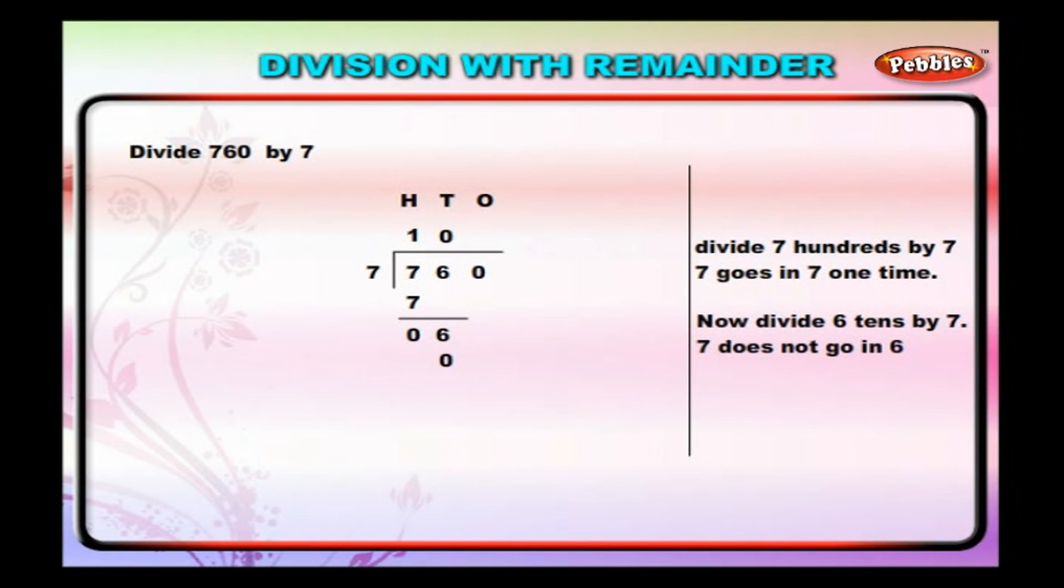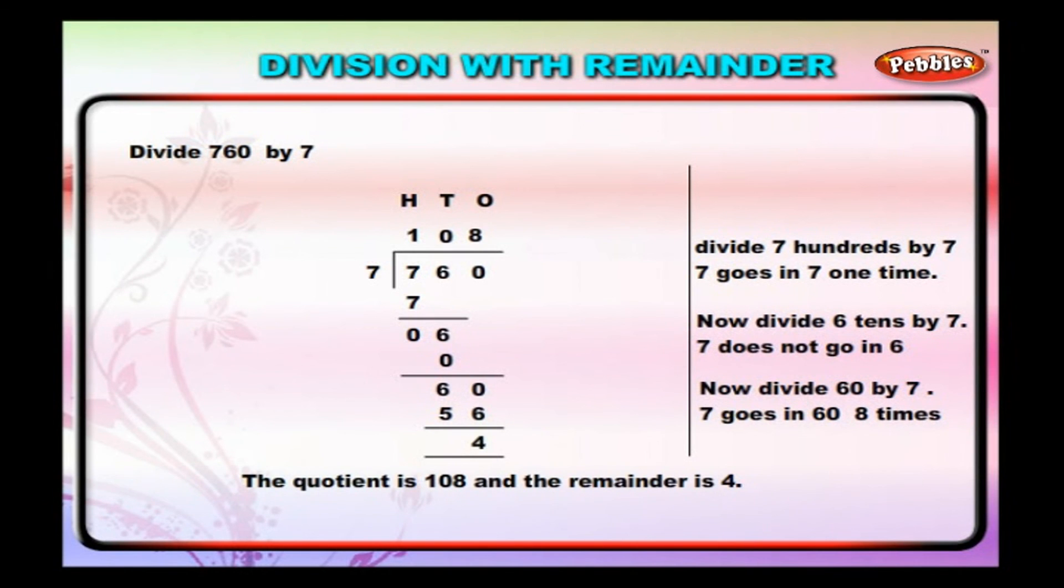So, write 0 in the tens place of quotient and bring 0 ones down. Now divide 60 by 7. 7 goes into 60 eight times. Write 56 below 60. The remainder is 4. The quotient is 108 and the remainder is 4.